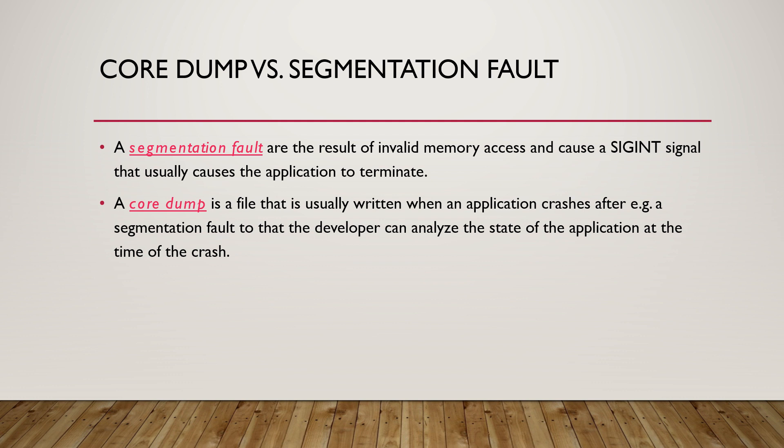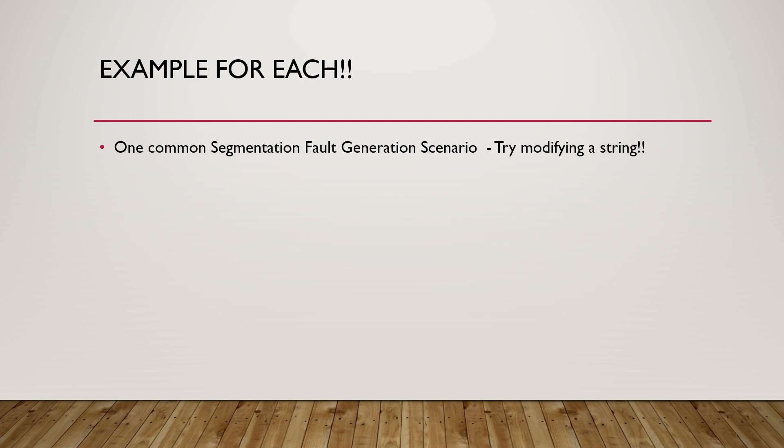Segmentation faults are the results of invalid memory access. When you come to Linux, this can cause a SIGSEGV signal — that is a segmentation violation interrupt that can cause the application to terminate. So as a result of improper memory access, your application will terminate, and as the result of that you will get the core dump file generated. So now you understand the difference between core dump and segmentation fault — I hope this is very easy and important.